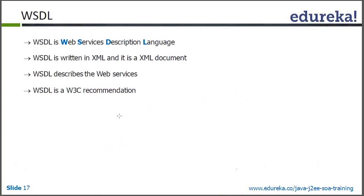Now let's look at the WSDL file. WSDL stands for Web Services Description Language. On the server side, all the functions exposed to the client are specified in the WSDL file. It is an XML document that contains: what are the functions, what are the input and output arguments, what are the data types of input and output, which protocol is used for communication, and on which URL the service is available. WSDL describes the web services and is a W3C recommendation.